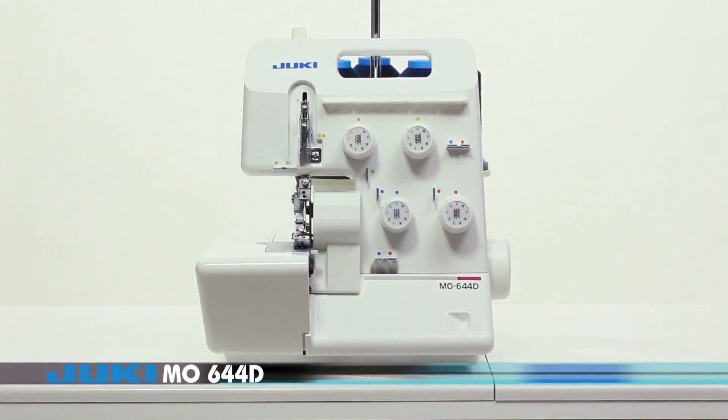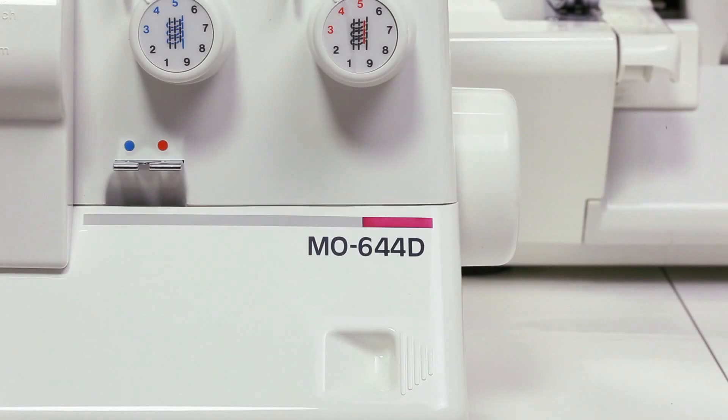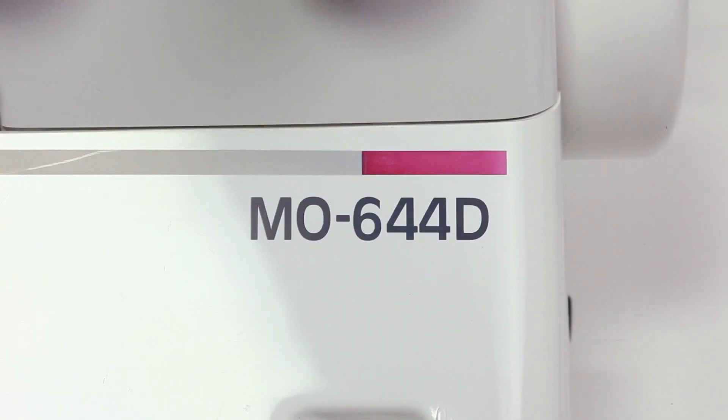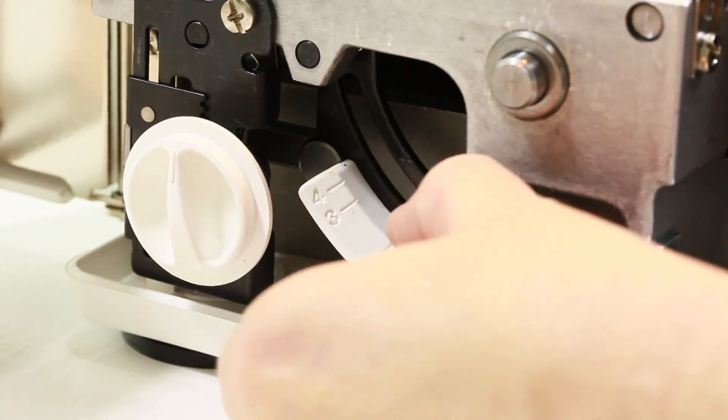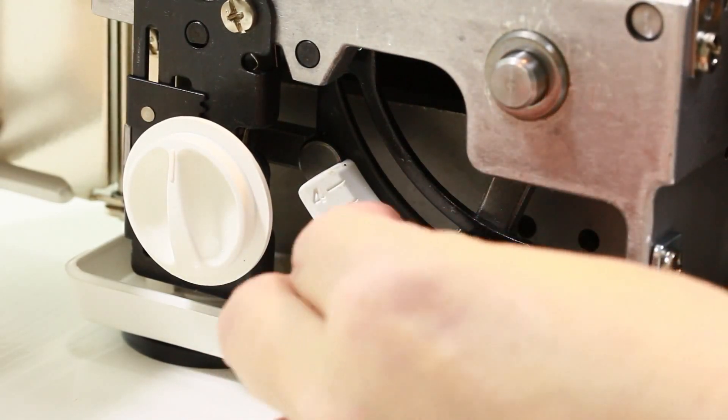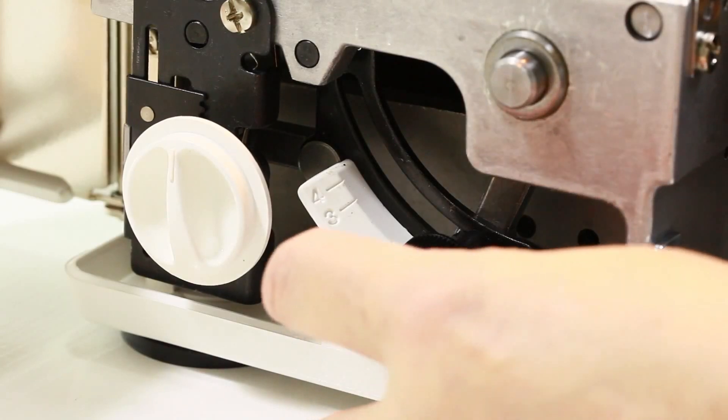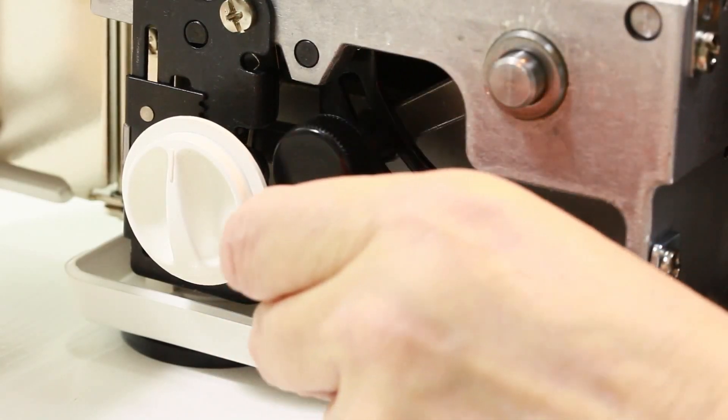The Juki M0644 is a 4-3-2 thread overlock with automatic built-in rolled hemming and differential feed. The M0644 has an adjustable stitch length between one to four millimeters. To change the stitch length, just turn the knob located on the side of the machine.